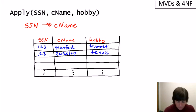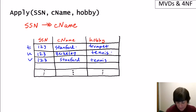So what our multi-value dependency says, and let's make this tuple T and tuple U, is that there's a further tuple V. V takes the same social security number and it takes the first value for the college name and the second for the hobby. So it says that if we have a one two three playing trumpet at Stanford and tennis at Berkeley, then that same person will be playing tennis at Stanford.